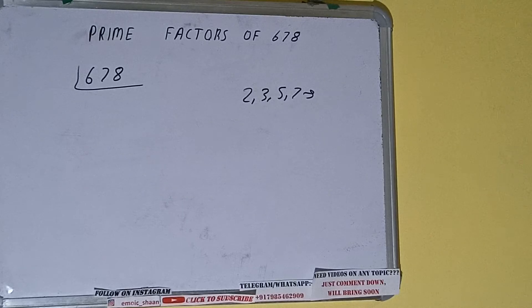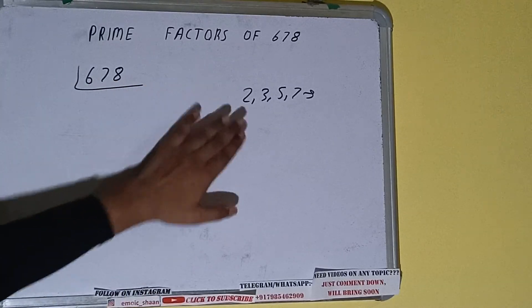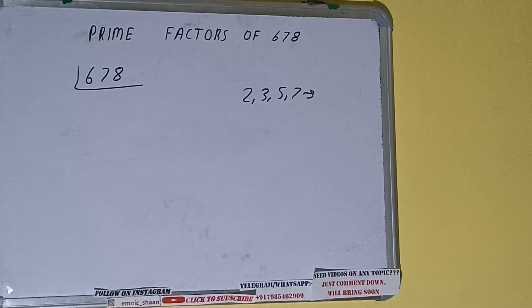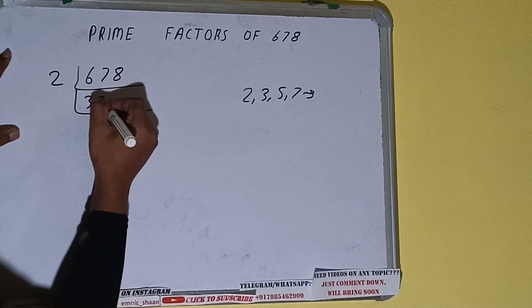Alright, so we'll check with the lowest prime number we have, that is 2. Is the number 678 divisible by 2? Yes it is, because the number is even. So divide it and we'll be having 339.